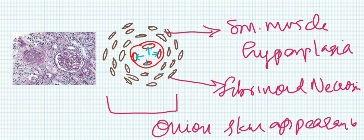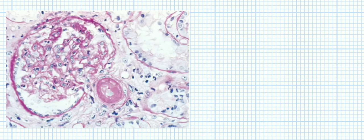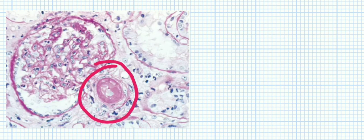This is what you see in malignant hypertension - hyperplastic arteriolosclerosis. Here's another picture where you can see this onion skin appearance.